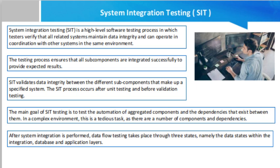SIT granularity may be performed at three distinct granularity levels. Intra-system testing is a low-level integration test that connects the modules to produce a unified system. Inter-system testing is a high-level test that requires the interfacing of independently tested systems. Pairwise testing: in this method, just two interconnected subsystems in the entire system are tested at the same time. This is done to ensure that the two subsystems operate effectively when merged, assuming that the other subsystems are already operating well.